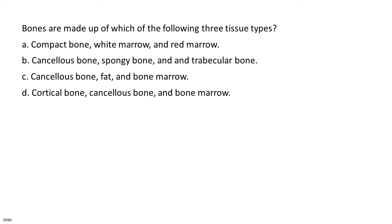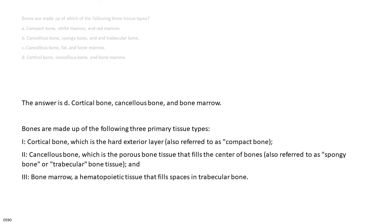Bones are made up of which of the following three tissue types? A. Compact bone, white marrow, and red marrow. B. Cancellous bone, spongy bone, and trabecular bone. C. Cancellous bone, fat, and bone marrow. D. Cortical bone, cancellous bone, and bone marrow. The answer is D. Bones are made up of three primary tissue types: 1. Cortical bone, which is the hard exterior layer, also referred to as compact bone. 2. Cancellous bone, which is the porous bone tissue that fills the center of bones, also referred to as spongy bone or trabecular bone tissue. 3. Bone marrow, a hematopoietic tissue that fills spaces in trabecular bones.